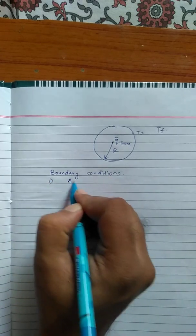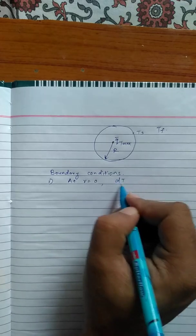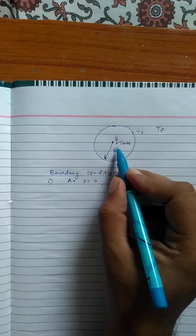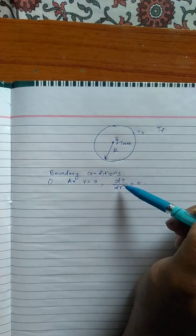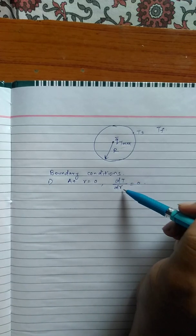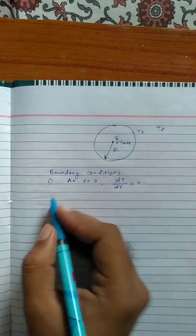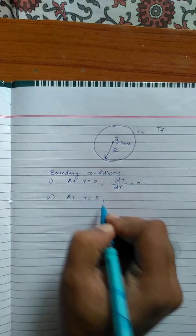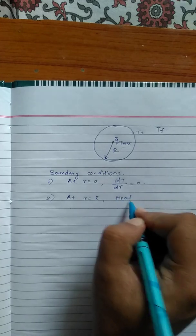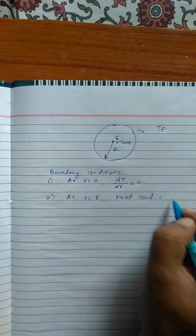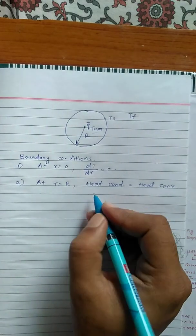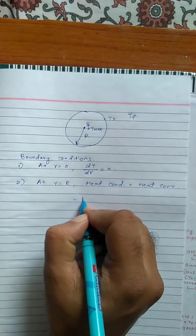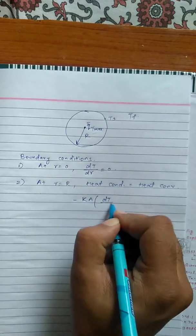Boundary condition 1: at r = 0, dT/dr = 0, because heat generation takes place at the center, so maximum temperature occurs there and the temperature gradient equals zero. Boundary condition 2: at r = R, heat conducted equals heat convected.